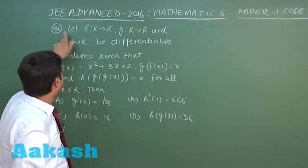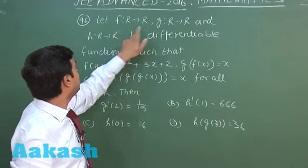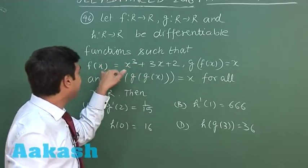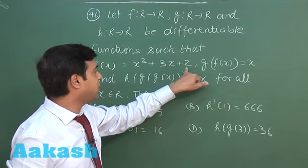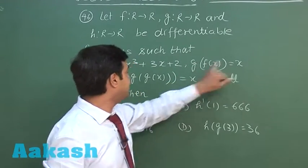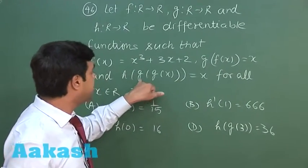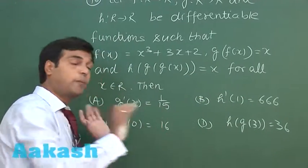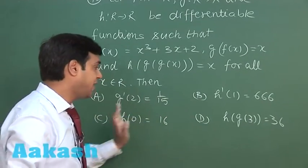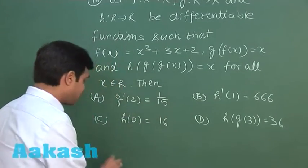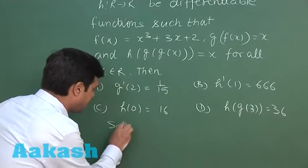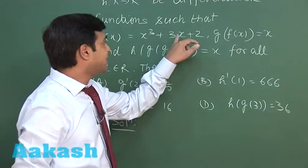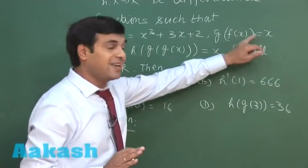Let us take the next one, that is question 46. Let f, g, h be 3 functions defined from R to R, all differentiable, such that f(x) = x³ + 3x + 2, g(f(x)) = x, and h(g(g(x))) = x for all real values of x. Four options are given about g', h', h, and h of g.